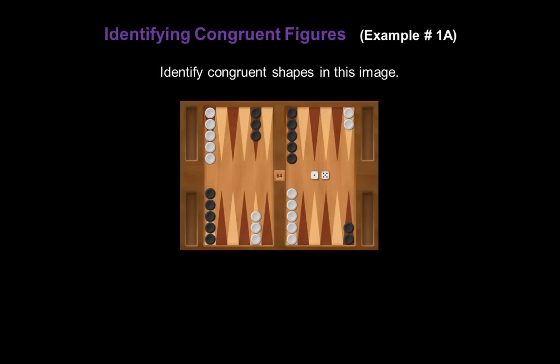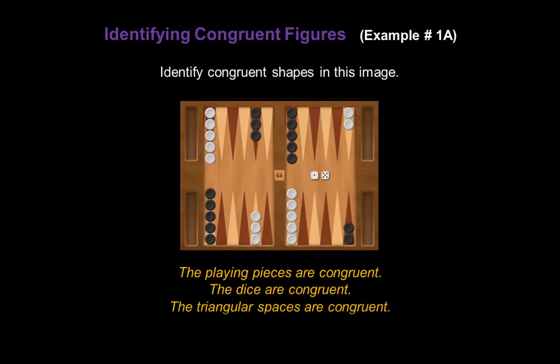Now identify congruent shapes in this image of a backgammon game. See if you come up with the same congruent figures that I do. It looks to me like the playing pieces are congruent, the dice appear to be congruent, the triangular spaces are also congruent, and the storage areas around the outside edges are also congruent.